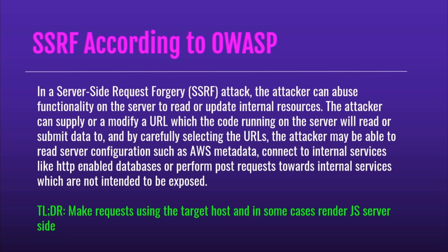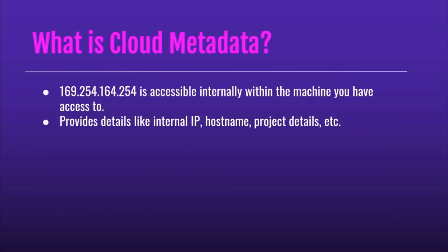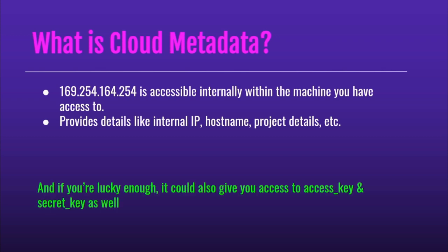TL;DR — you're just making a request from the target host, and in some cases you can run JavaScript server-side. If you're not familiar with the cloud metadata, that IP address shown is wrong — it's supposed to be 169.254.169.254. If you go there, there's a lot of good information: the hostname, internal IP address, external IP address, and some other info. But the best part is it could give you access to the keys and secret keys to the kingdom. Once you get to that, it's pretty much game over and you can escalate.